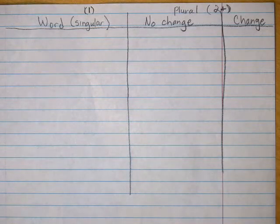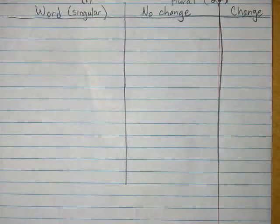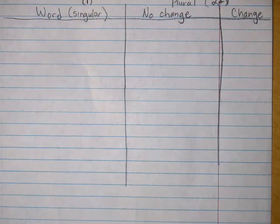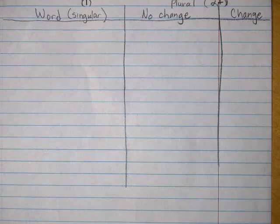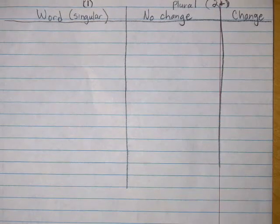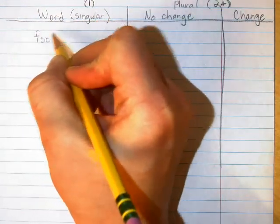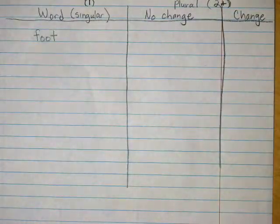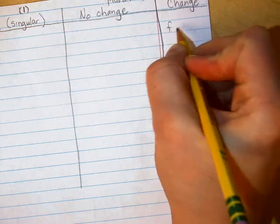All right, so the word is foot. First of all, try to write the word foot — foot is going to be singular. Just one foot. I have one foot on my left leg. This is how foot is spelled: F-O-O-T. And then I want you to change foot to feet. I have two feet. Obviously that one's a change — kind of gave that one away.